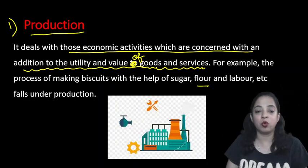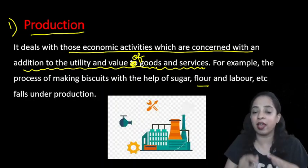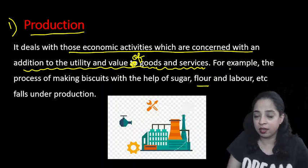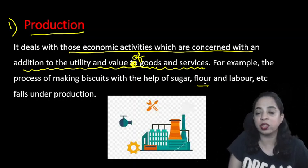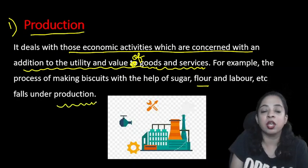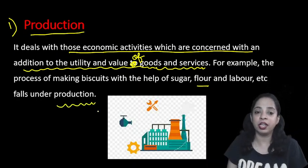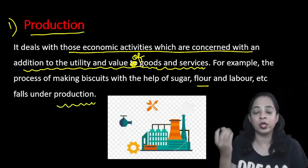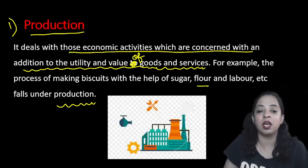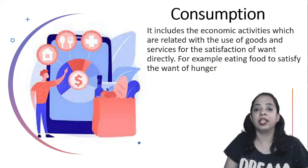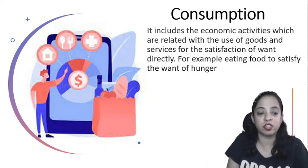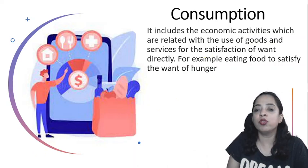For example, we have flour — we add utility and value to that good. The process of making biscuits with the help of sugar, flour, and labor falls under production. When you add utility or value to goods and services, it comes under production.